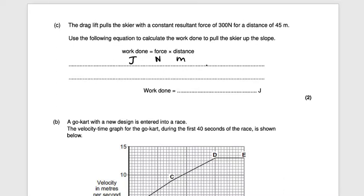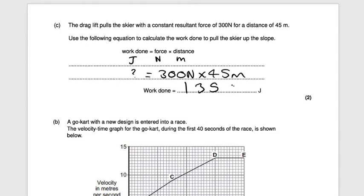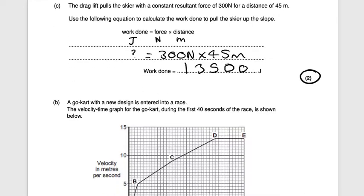The question asks to calculate the work done — it's worth two marks. Work done equals force multiplied by distance, so that's 300 newtons multiplied by 45 meters. Doing 300 × 45 gives an answer of 13,500 joules for two marks.